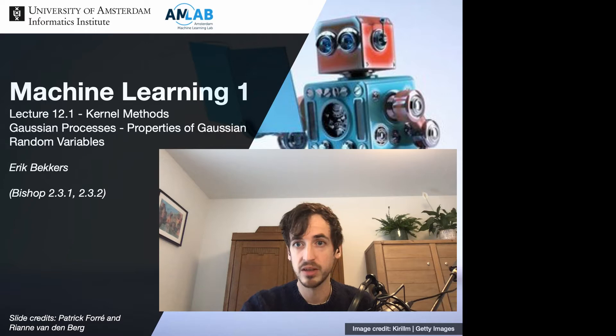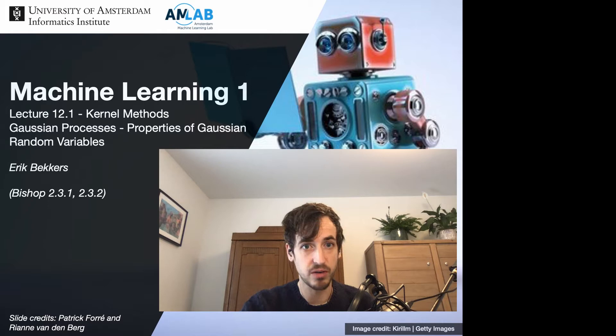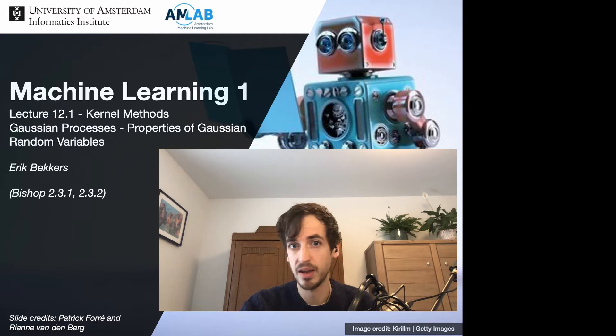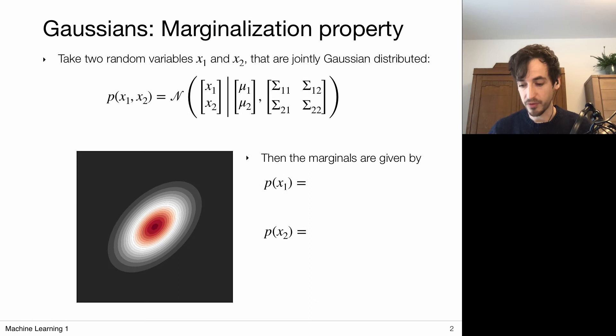Now also for kernel methods we can adopt a probabilistic viewpoint. We just discussed the non-probabilistic support vector machines, and in the upcoming videos we will introduce a probabilistic kernel method. The idea is that we're going to introduce a sort of distribution from which we can sample functions. So the random value will not be a single number or a vector, but it will be a full function which will look different every time I sample it. Such distributions will be called Gaussian processes, and to get there it is good to go over some core properties of Gaussians first.